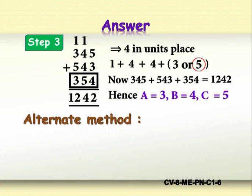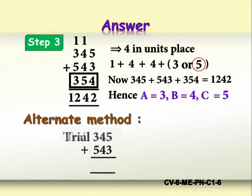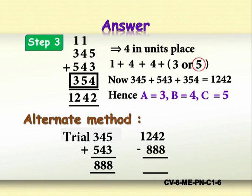Alternate method: Let A equal 3, B equal 4, C equal 5. Then ABC plus CBA equals 345 plus 543 equals 888. Now, 1242 minus 888 equals 354. Hence the third row is 354. Therefore, A equals 3, B equals 4, and C equals 5.